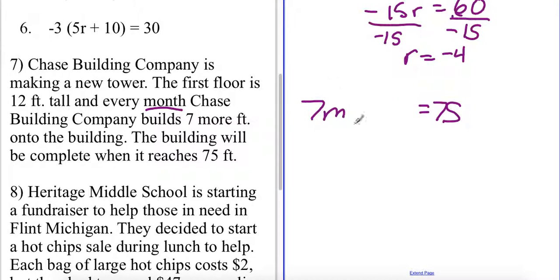So again we have 7m plus 12 equaling 75 and just like last time I'm going to subtract by my constant first. I get 7m is equal to 63.